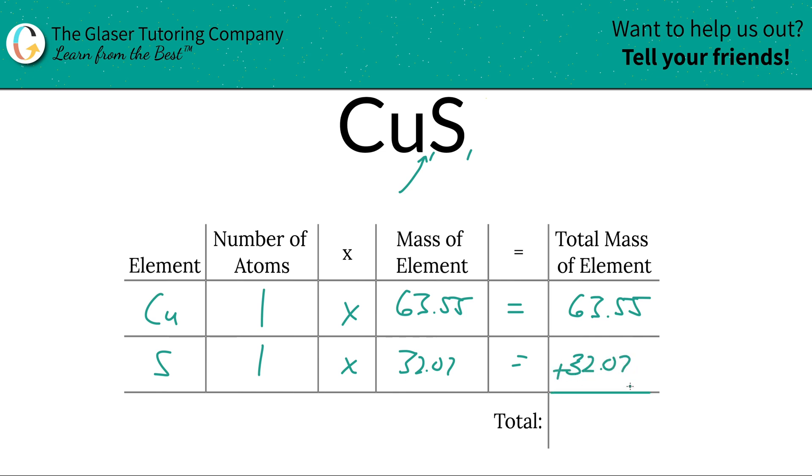And then if we want to find the total mass of the entire compound, which is what we're trying to do here, we're going to simply add them together. So this works out to be 95.62.